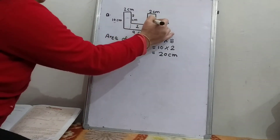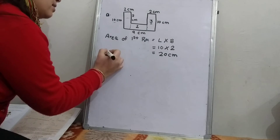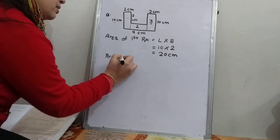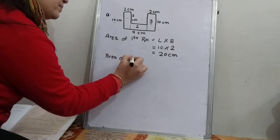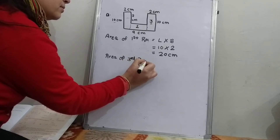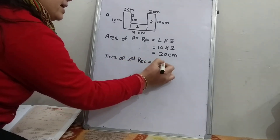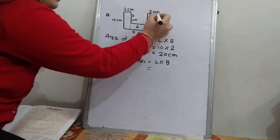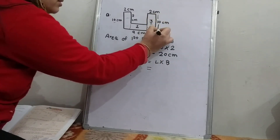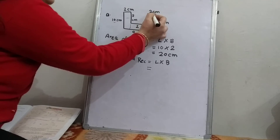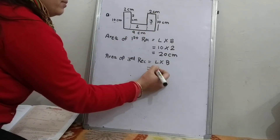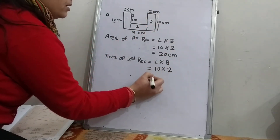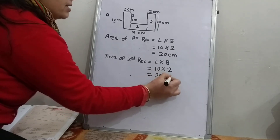Now I will take the third rectangle. Area of third rectangle — again it is length multiplied by breadth. Here the length is 10 cm and the breadth is 2 cm. So 10 multiplied by 2, it is the same: 20 cm².